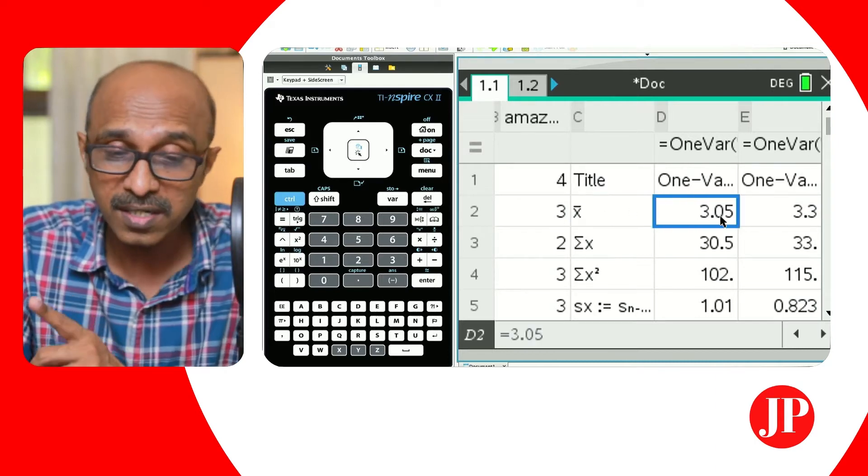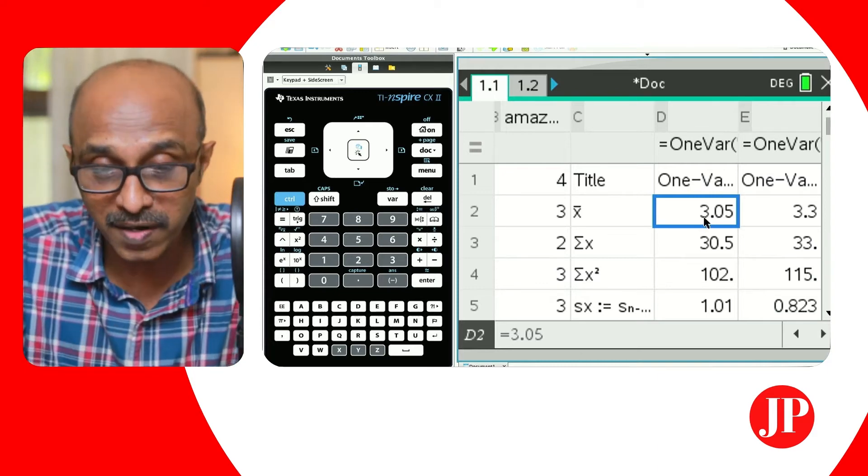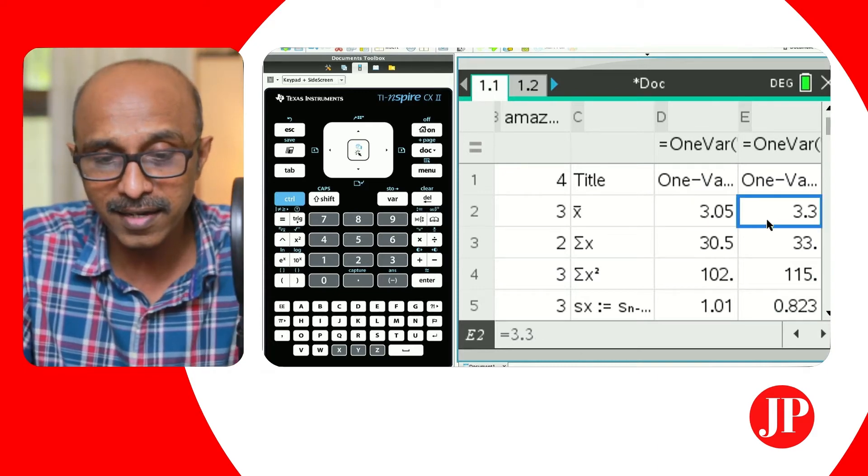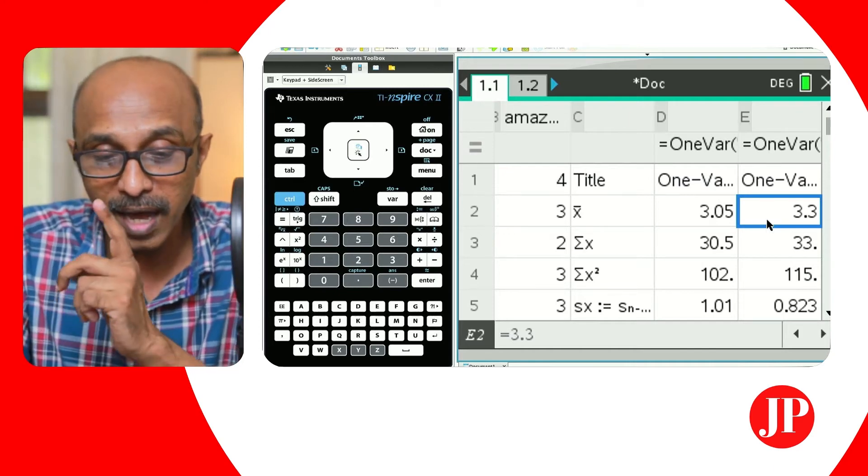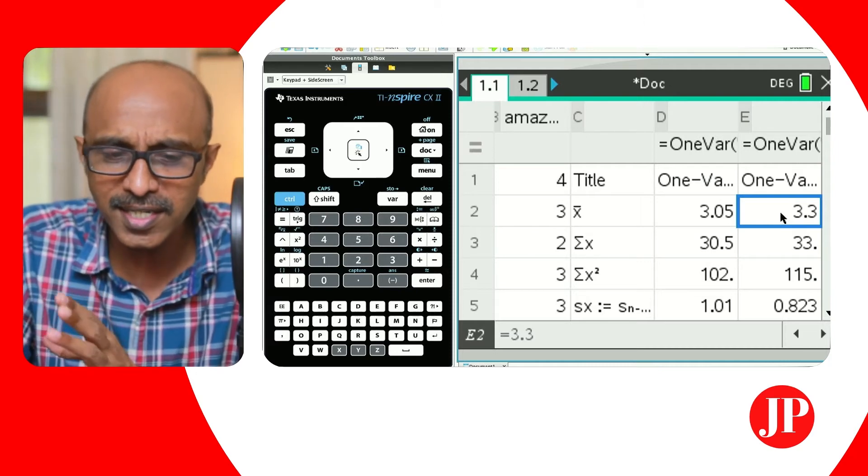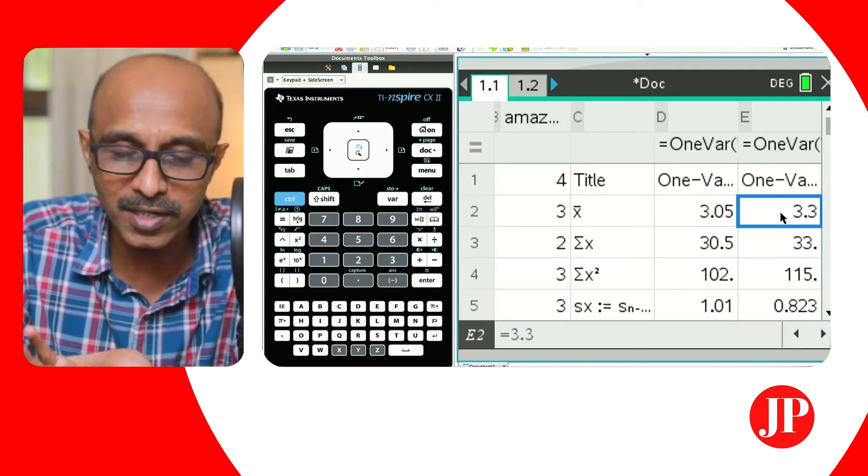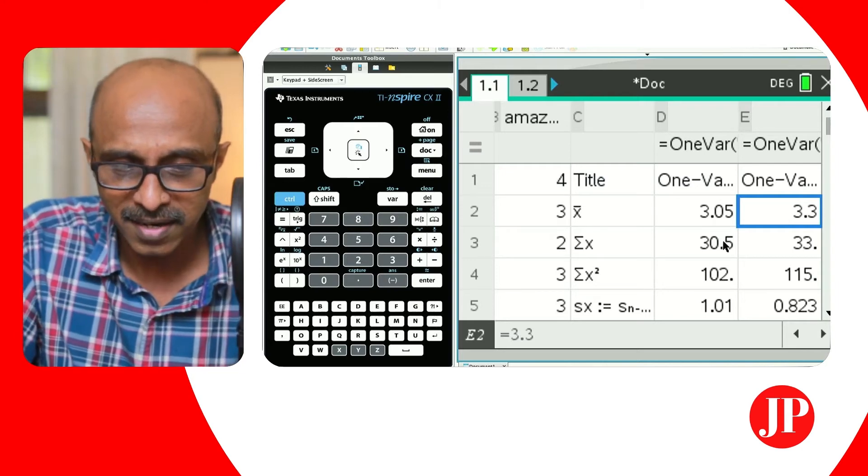The mean number of hours for Netflix happens to be 3.05, and the mean number of hours for Amazon Prime happens to be 3.3. So you can look at those kinds of statistics and then make your own inferences about which one seems to be more popular or something like that.